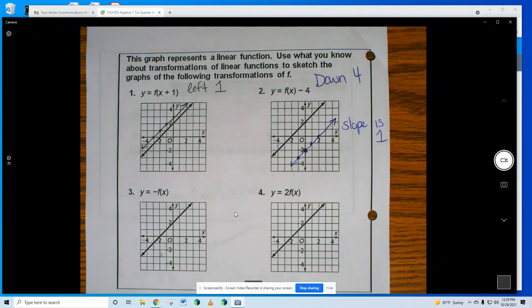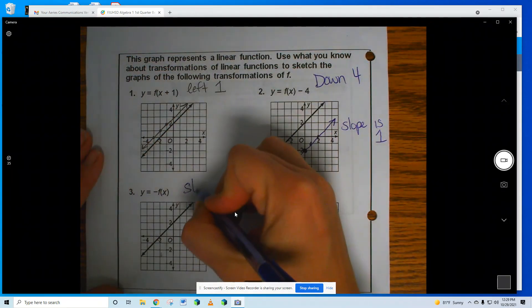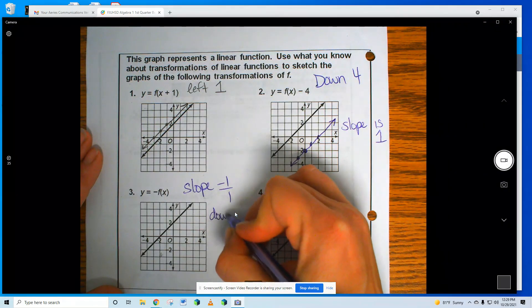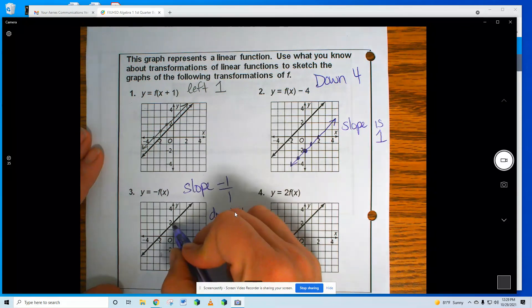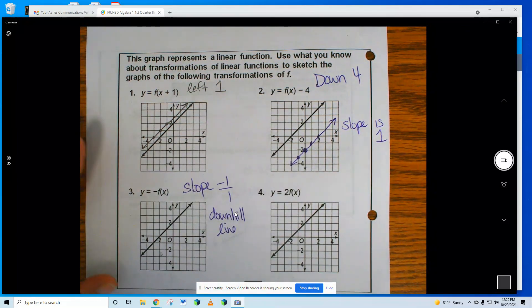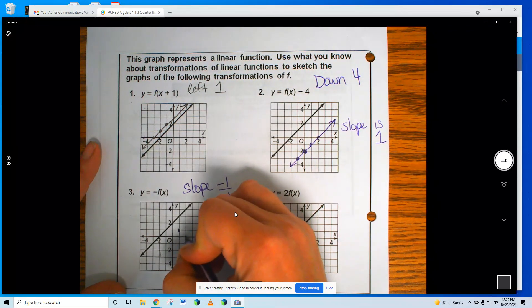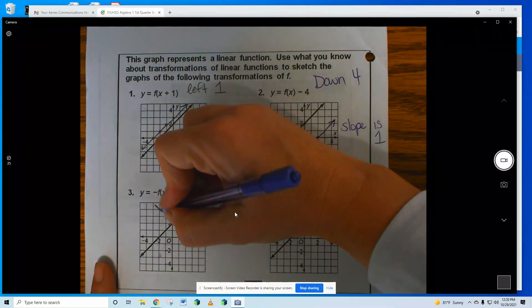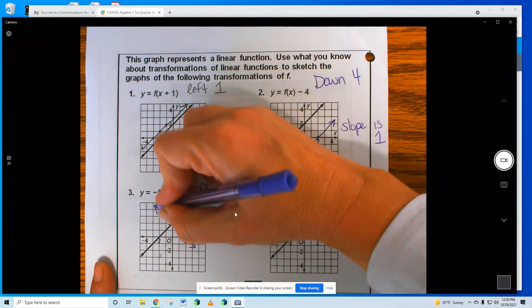A negative f(x). What did I say? Negative x, I've talked about on that page before. Yeah, negative 1 is my slope. My slope is negative 1. This is going to be a downhill line. So I'm going to start at the same y-intercept, and I'm going to go down 1 over 1, down 1 over 1. And there you go.